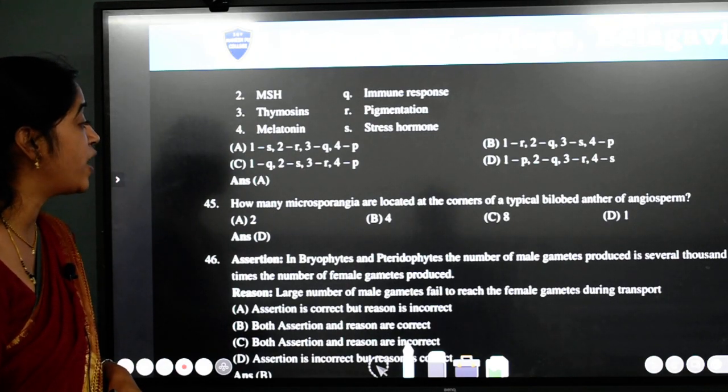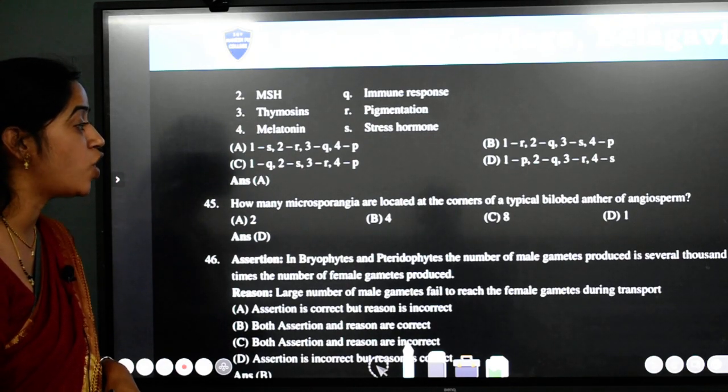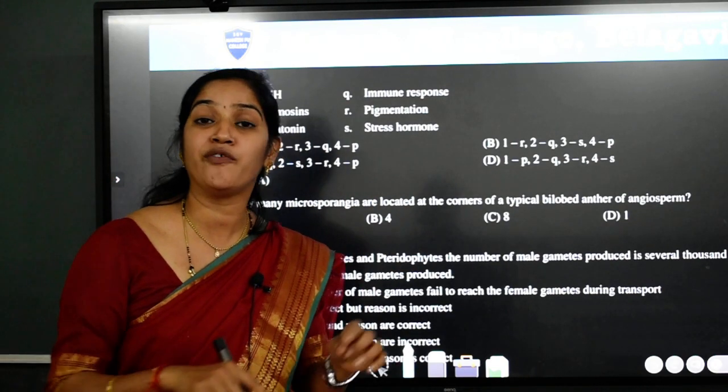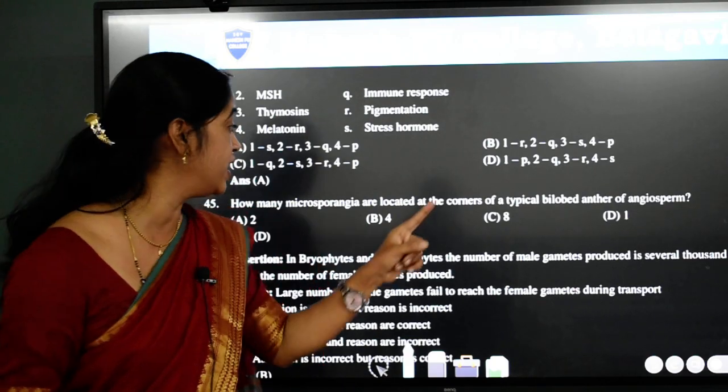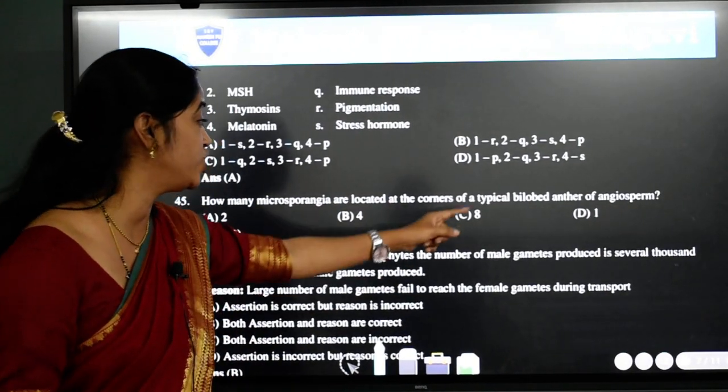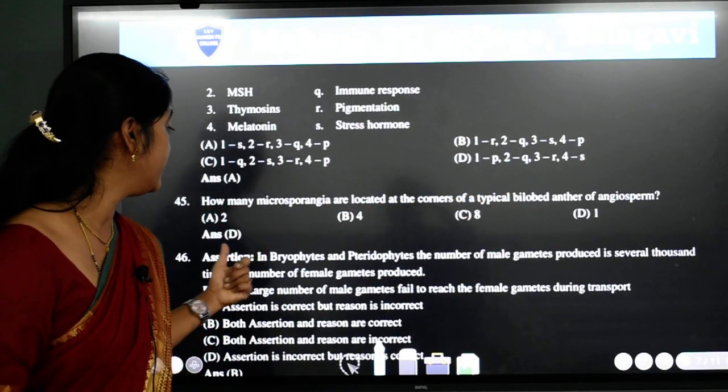Next question. How many microsporangia are located at the corners of a typical bilobed anther of angiosperm? See student, in the bilobed anther we have got 4 microsporangia. But here they are asked at the corner. At the corner there will be 1 microsporangium. So the answer is D, that is 1.